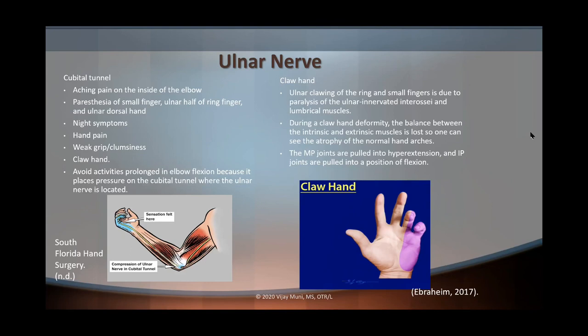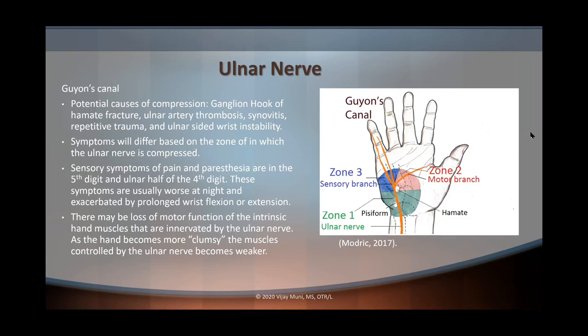Now let's talk about Guyon's canal. With Guyon's canal, there are potential causes of compression such as the ganglion, hook of hamate fracture, ulnar artery thrombosis, synovitis, repetitive trauma, and ulnar-sided wrist instability. Symptoms will differ based on the zone in which the ulnar nerve is compressed. Essentially, symptoms of pain and pins and needles are in the fifth digit and the ulnar half of the ring finger — usually worse at night and exacerbated by prolonged wrist flexion or extension. There may also be a loss of motor function of the intrinsic hand muscles innervated by the ulnar nerve, and as the hand becomes more clumsy, the muscles become weaker.